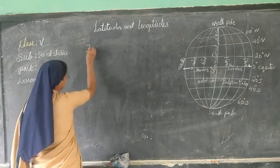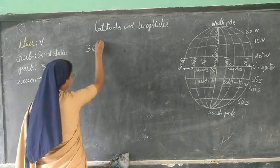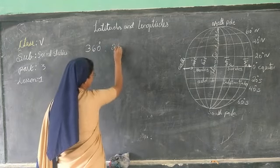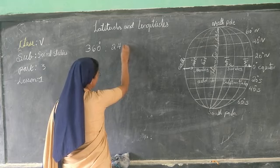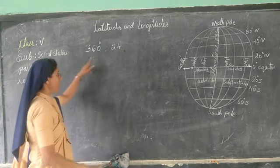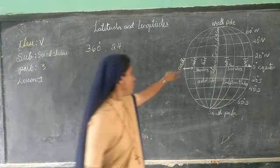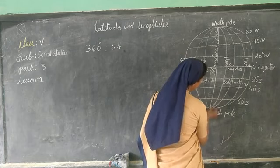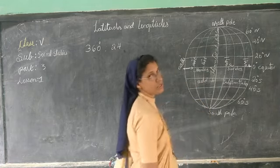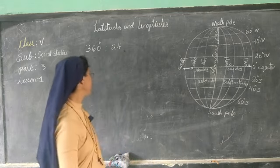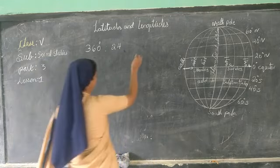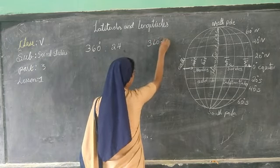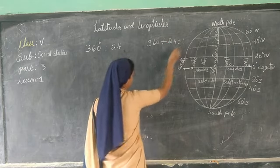The Earth is 360 degrees. To rotate one full day, that is 24 hours, it covers 360 degrees. So when we take from one longitude to another longitude and calculate how much time it takes, we get 360 divided by 24, which equals 15. So one hour covers 15 longitudes.